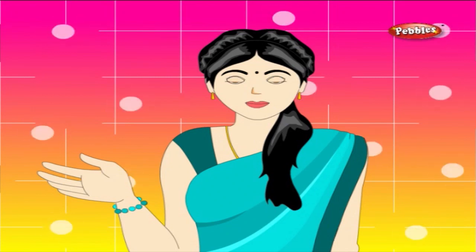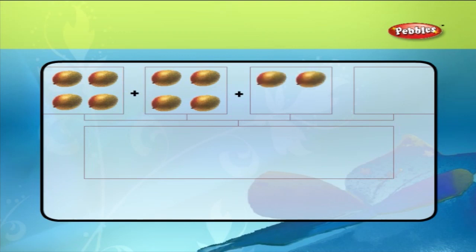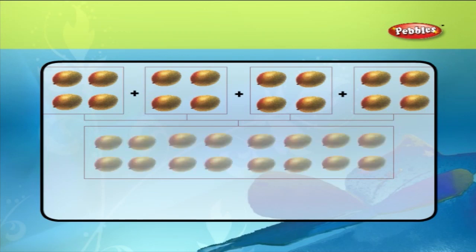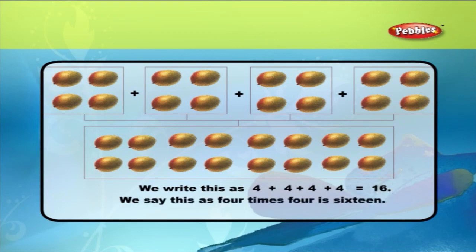We shall see an example with 4 numbers. Let us count these mangoes: 1, 2, 3, 4. 4 plus 4 plus 4 plus 4 is equal to 16. We say this as 4 times 4 is 16. We can write this as 4 into 4 is equal to 16.